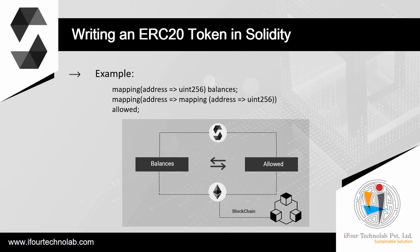The first mapping object, `balances`, will hold the token balance of each owner account. The second mapping object, `allowed`, will include all of the accounts approved to withdraw from a given account, together with the withdrawal sum allowed for each. The value field of the `allowed` mapping is itself a mapping, plotting account addresses to their approved withdrawal sum. These mappings, together with all other contract fields, will be stored in the blockchain and will be mined, resulting in changes being propagated to all network user nodes.